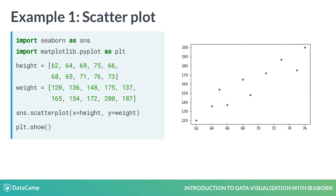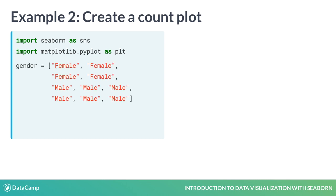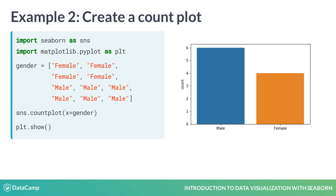How many of our observations of heights and weights came from males vs. females? You can use another type of plot, the count plot, to investigate this. Count plots take in a categorical list and return bars that represent the number of list entries per category. Use the count plot function and provide the list of every person's gender. This count plot shows that out of the 10 observations we had in our height and weight scatterplot, 6 were male and 4 were female.